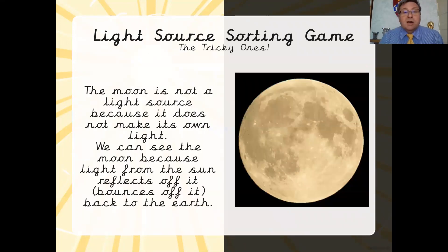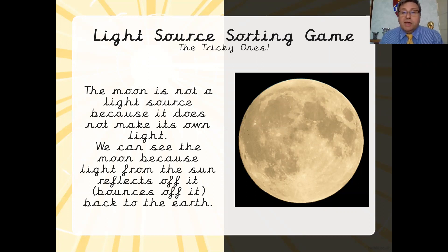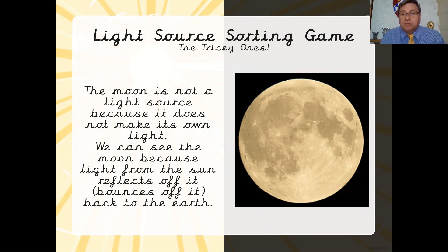The moon, for example, is not a light source. It doesn't create its own light. The only reason we can see the moon is because the light from the sun is reflecting off it and bouncing back to earth. So that's why we see it - it doesn't actually create light. It just reflects and bounces back light from the sun back to earth, which enables us to see it.